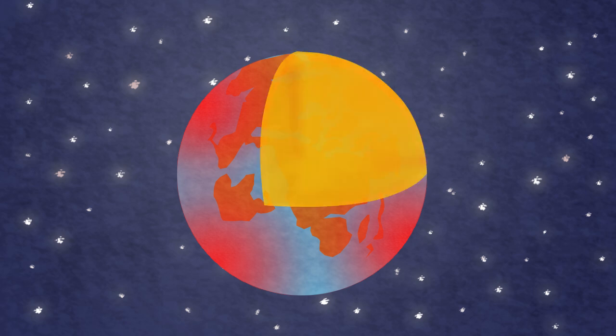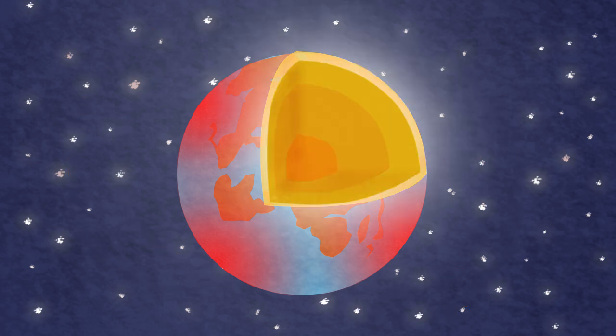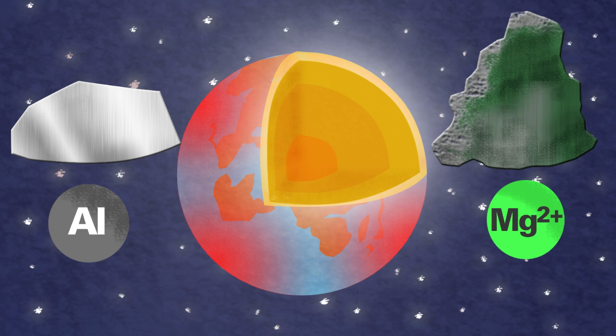When the Earth was still very hot, the dense iron sank to form a solid inner and molten outer iron core. It is this liquid iron that is responsible for the Earth's changing magnetic field. The lighter rocky material, made mainly of aluminium and magnesium silicate, formed the hot solid mantle.